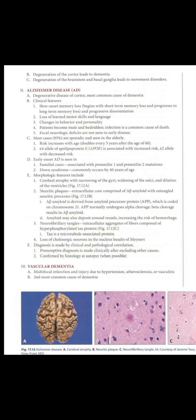Infection is a common cause of death. Focal neurologic deficits are not seen in early disease. Most cases — about 95 percent — are sporadic and seen in the elderly. Risk increases with age, doubling every five years after the age of 60.